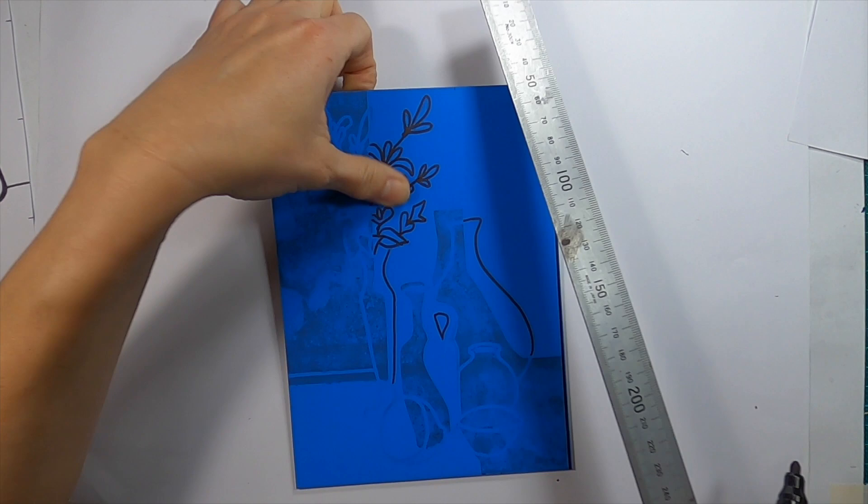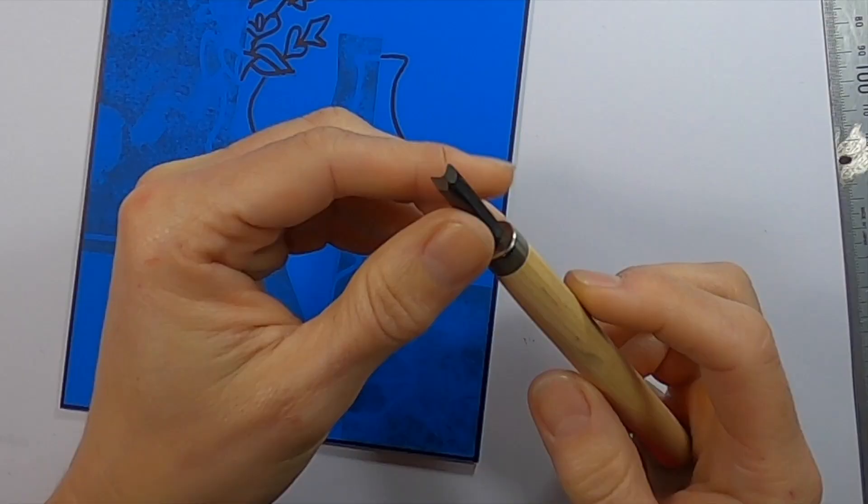And now it's time to cut the lino. Here I'm adding a border around the edge of the plate. I'll leave this border uncut. As well as providing a neat outline, it helps to stop the roller from sinking into the cut out areas.